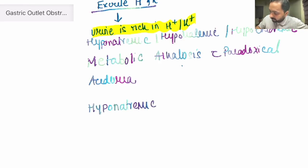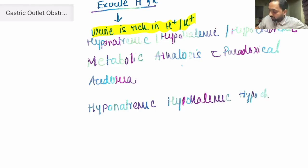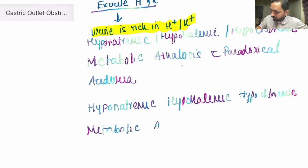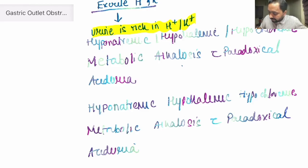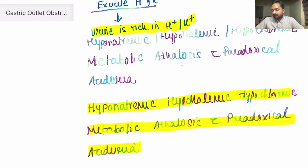As a result, the metabolic changes we get are: hyponatremia, hypokalemia, metabolic alkalosis with paradoxical aciduria. This is very commonly asked in your finals and final semester examinations, and is definitely a potential MCQ in each and every exam where you would be asked regarding the metabolic changes of gastric outlet obstruction. Thank you.